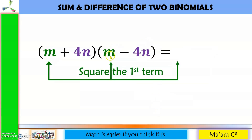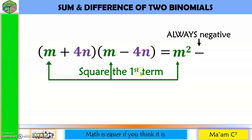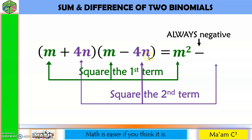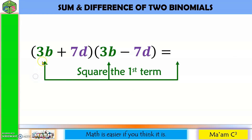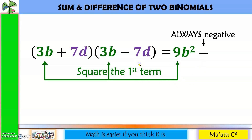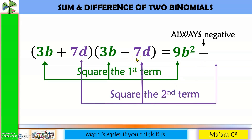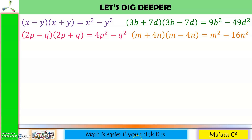Another one: let us square the first term. The square of m is m squared. Always negative. And then the square of 4 is 16, the square of n is n squared, so we have 16n squared. Another one: let's square the first term. The square of 3 is 9, the square of b is b squared, so we have 9b squared. Always negative. Square the second term: the square of 7 is 49, the square of d is d squared, so we have 49d squared.